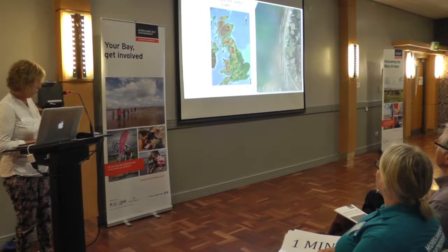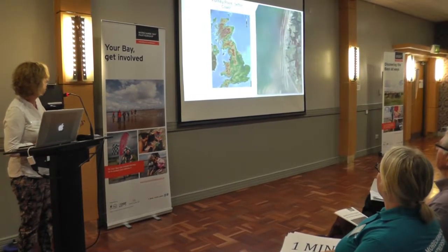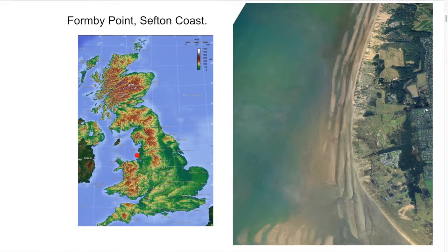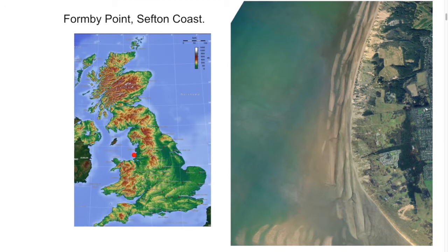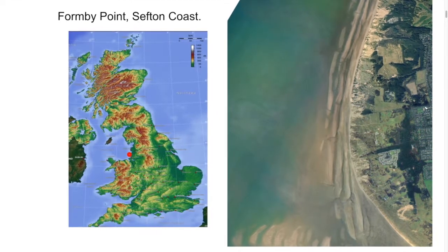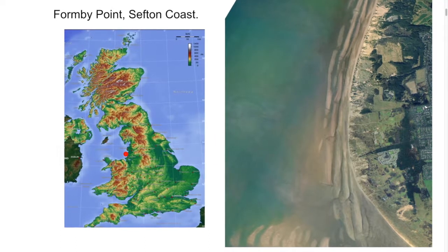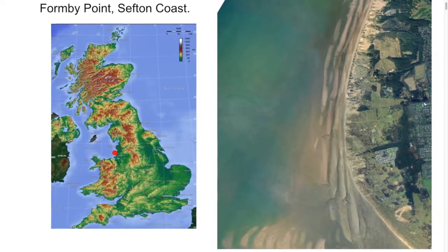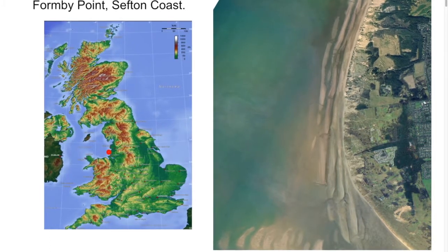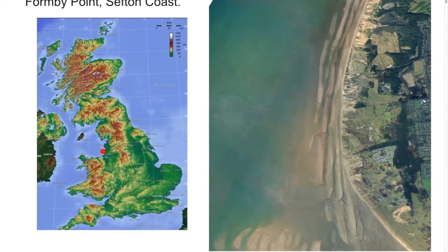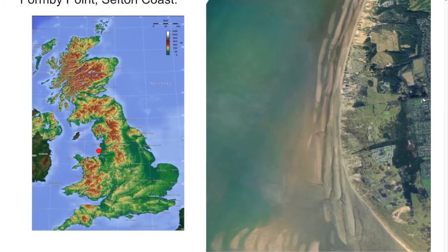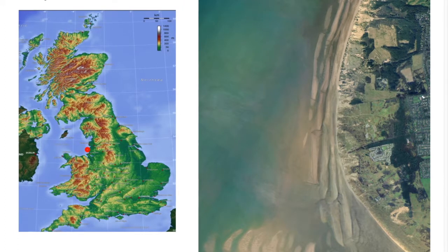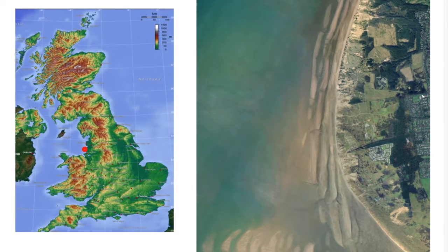Just to be clear where Formby is — I've highlighted it with a little red dot there. It's a little cusp of land which sticks out into the Irish Sea, and therefore is quite prone to coastal erosion and change. Particularly at the moment it's losing several metres of dune each year, which is why we're beginning to see lots of new outcrops of mud appear on the beach. They happen in an alignment stretching for about four kilometres.